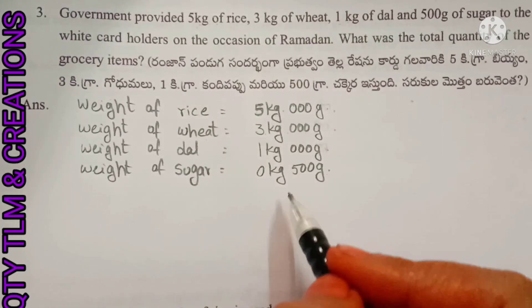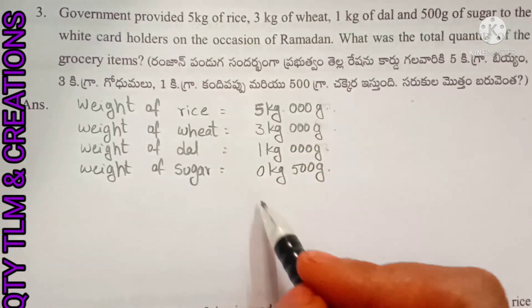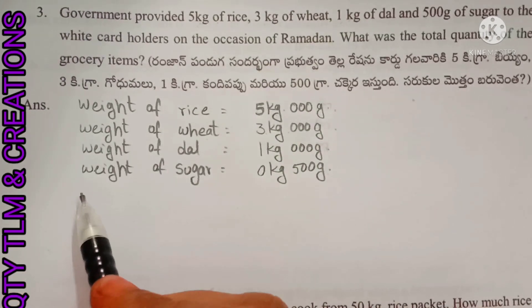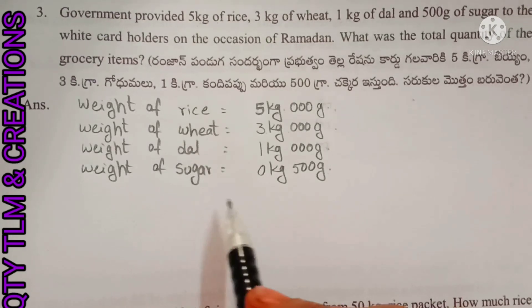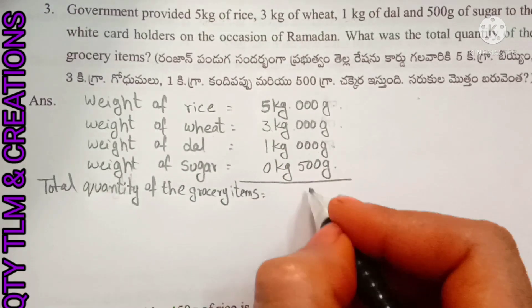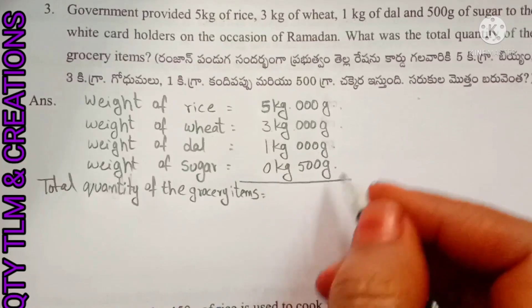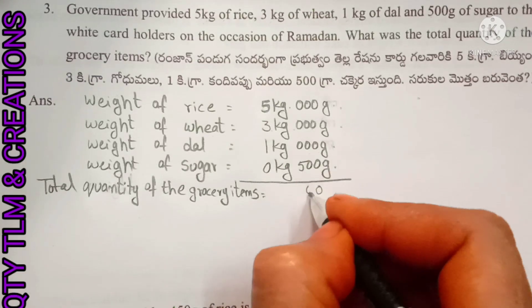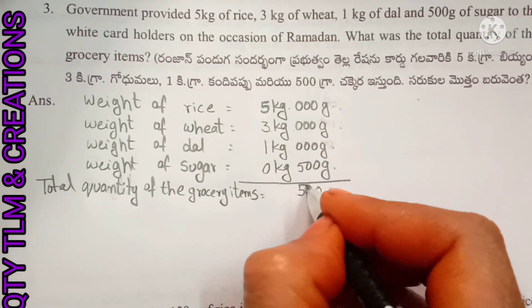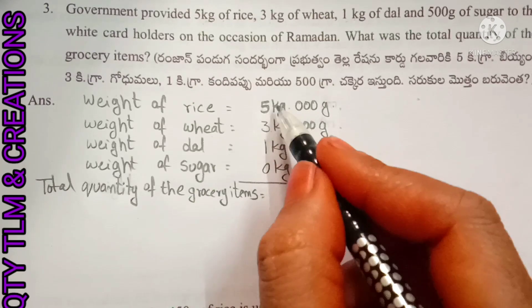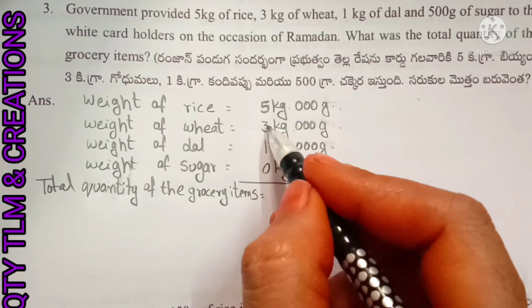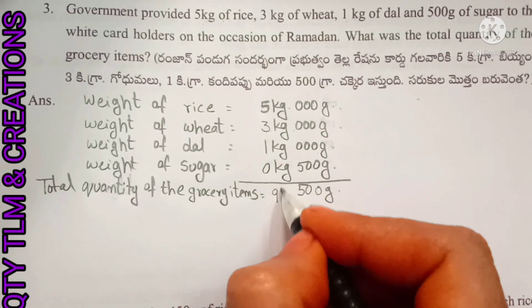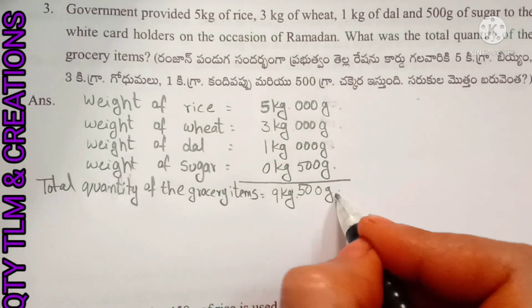We have to add these items provided by the government. Total quantity of grocery items: 0 plus 0 plus 0 plus 500 grams gives 500 grams; and 5 plus 3 plus 1 gives 9 kilograms. Total quantity equals 9 kilograms and 500 grams.